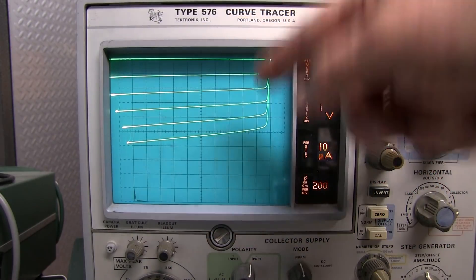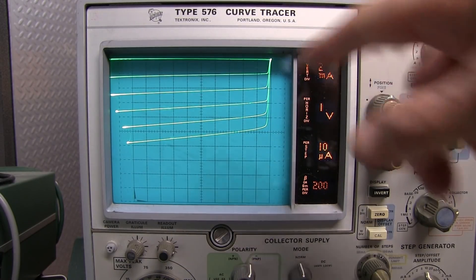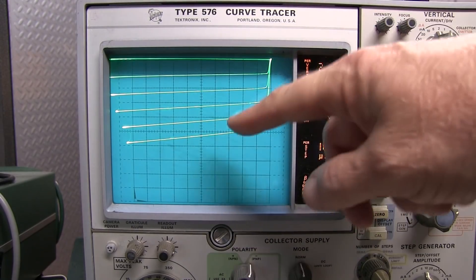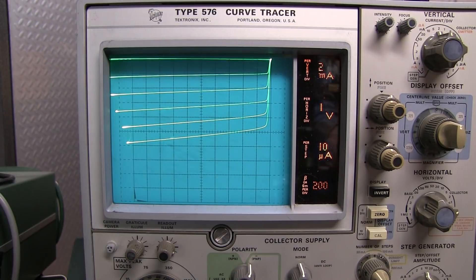This is typical of the collector current characteristic curves for a PNP transistor like this 2N3906. Most people aren't used to looking at curves in this kind of negative fashion because this is a PNP device. We do have the ability of inverting that on the curve tracer.